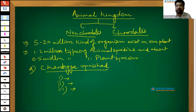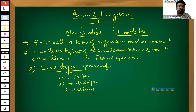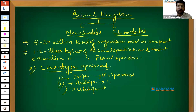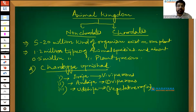In the ancient Indian classification, all animals were grouped into three parts. Number one is Jeevaja, meaning viviparous. Number two is Andaja, meaning oviparous. And number three is Udbhija, meaning of vegetative origin. So this was the Indian system of classification of animals.